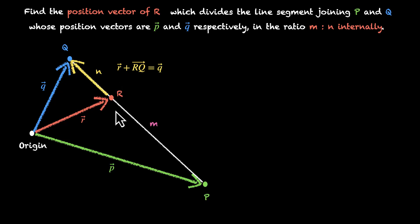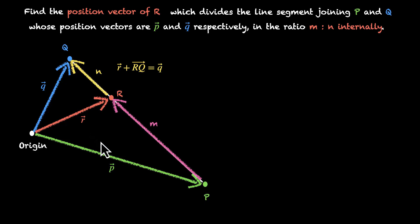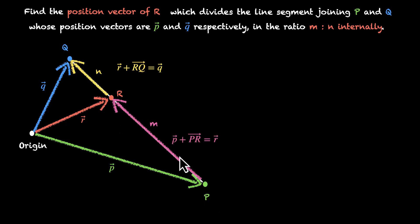We can do the same for one more vector. In this triangle, we have pr vector. To go from origin to r, we have two ways: either directly, or through p. So r vector equals p vector plus pr vector. Using this equation, we can figure out pr vector in terms of p and r: pr vector equals r vector minus p vector.